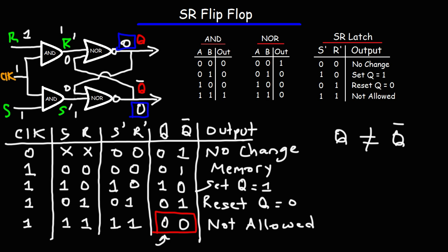That's the basic operation behind the SR flip-flop. Remember, in order for the output to change you need an active clock signal — the clock input has to be high. If you have a 0 at the clock input, regardless of what S and R are, S prime and R prime will both be 0 and there will be no change in the output. Whatever the output is at that instant in time, it's going to remain that way regardless of what happens to S and R. Hopefully this gave you a good idea of how the SR flip-flop circuit works.